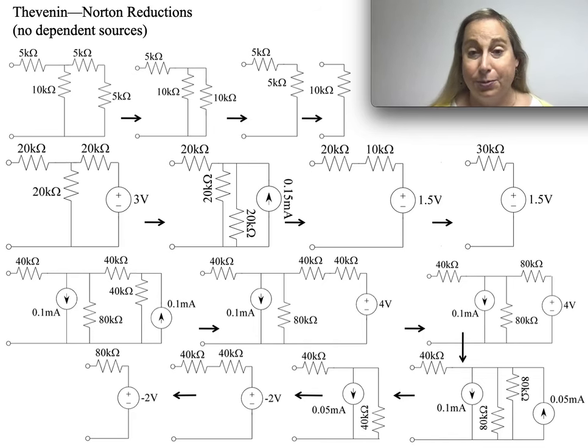Thevenin and Norton equivalence is really interesting and there are amazing things you can do in terms of reducing circuits this way. So what I want to do is talk about three different versions of it, all three with no dependent sources: one, two, and three.